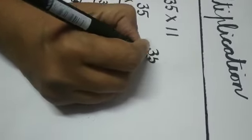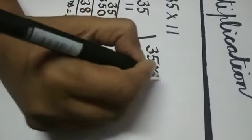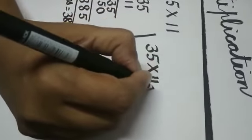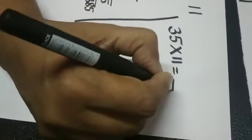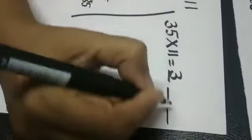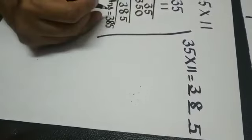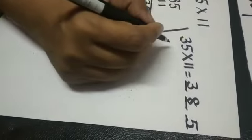Now here is one method to quickly do and verify your answer. For 35 multiplied by 11, put three blanks, write the first number here and the last number here, then three plus five is eight. Within seconds you have got the answer, so you know your answer is right.